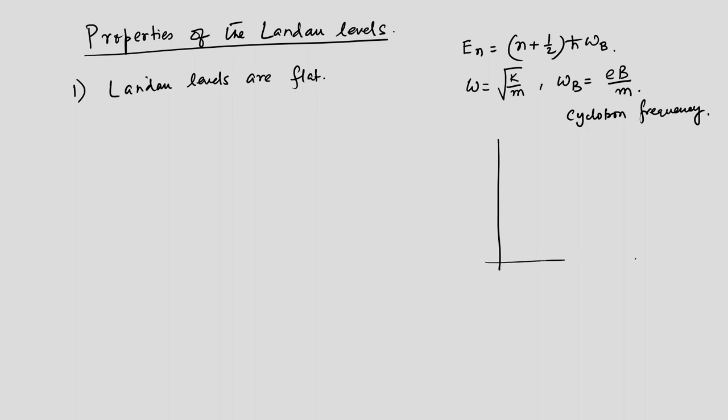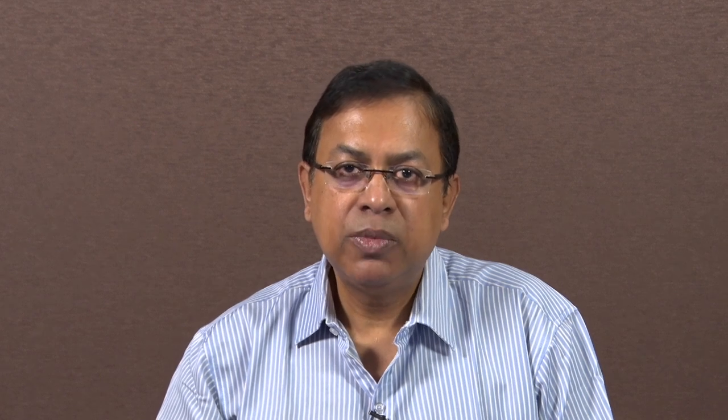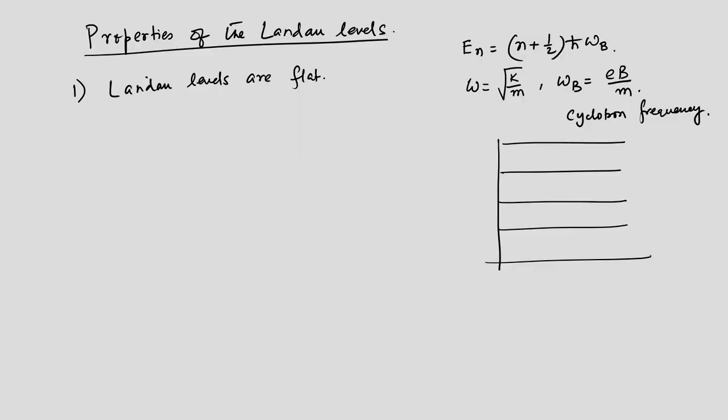So these levels, if you draw them, they look like N=0, N=1, N=2, N=3, and so on. I have argued and showed explicitly that these levels are, in principle, infinitely degenerate, and the degeneracy is only limited by the magnitude of the magnetic field and the area of the sample. If you take a macroscopic area — say a few millimeters by a few millimeters — and 12 to 15 tesla of magnetic field is being used, then these levels are really degenerate and they are flat.